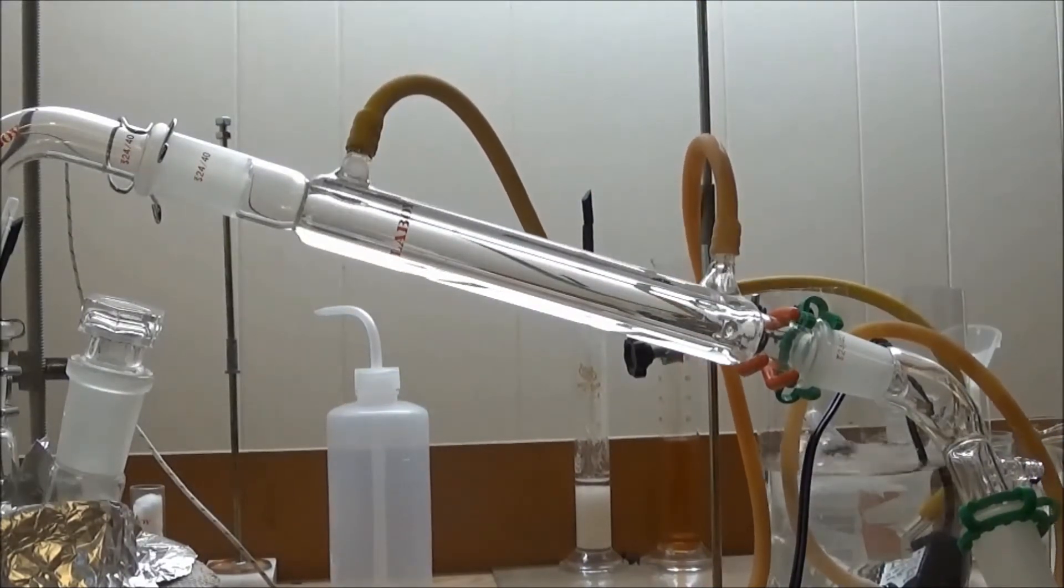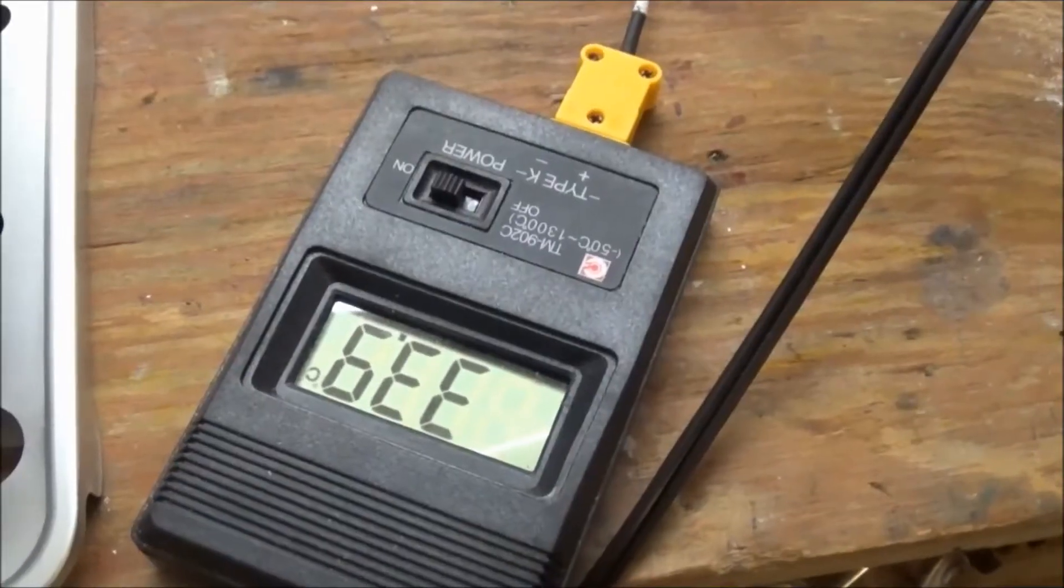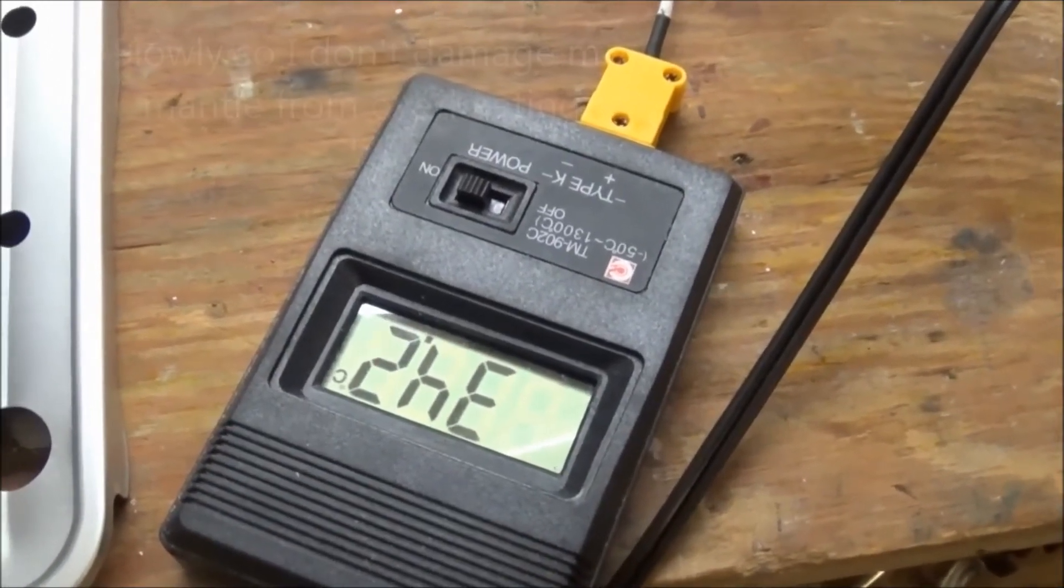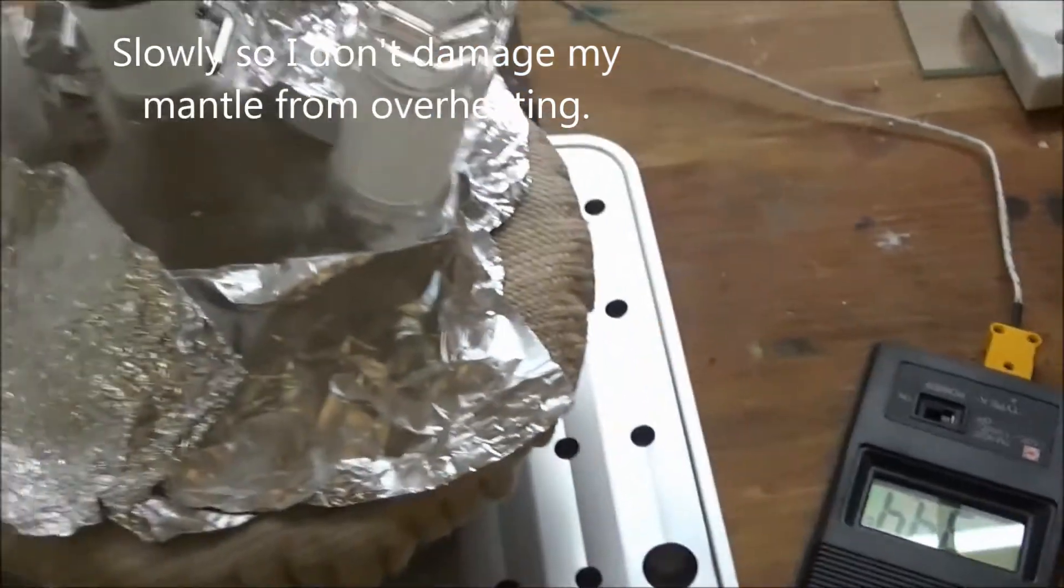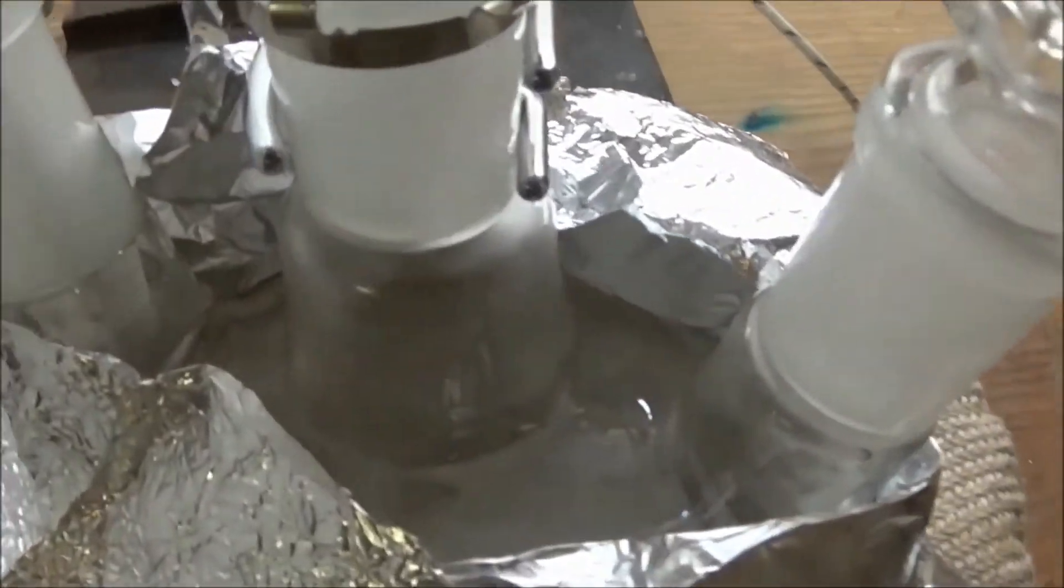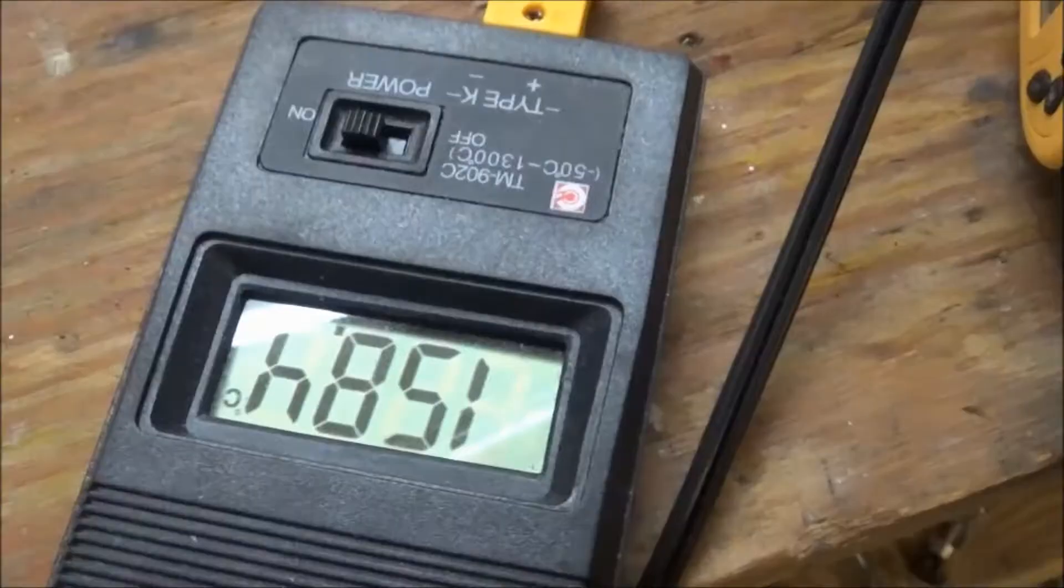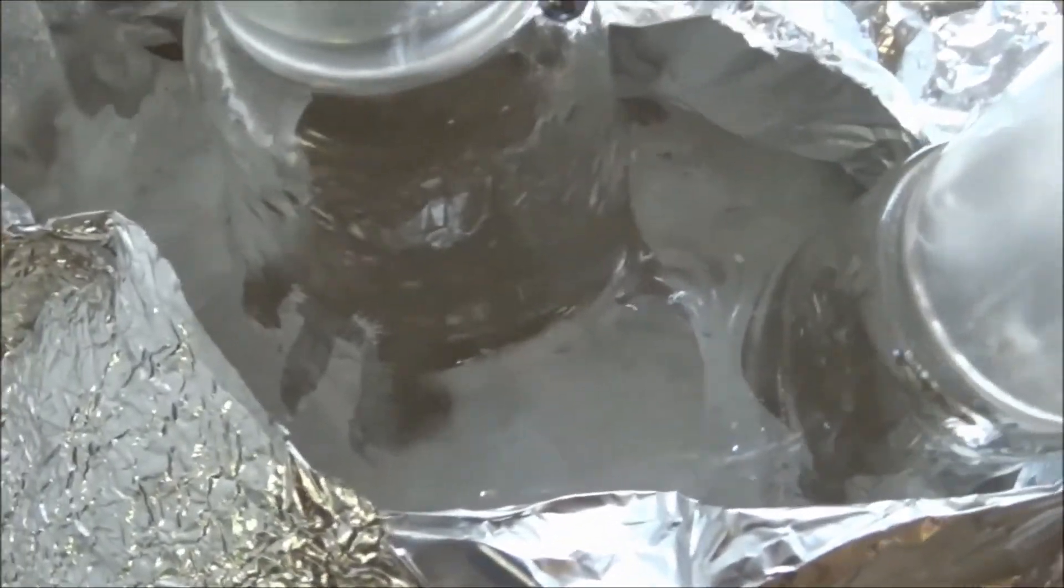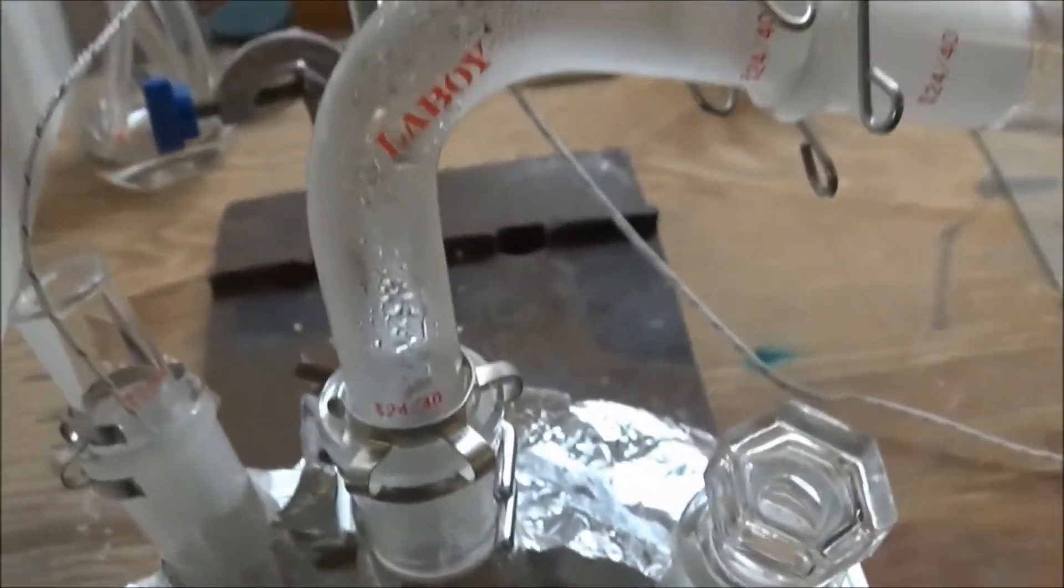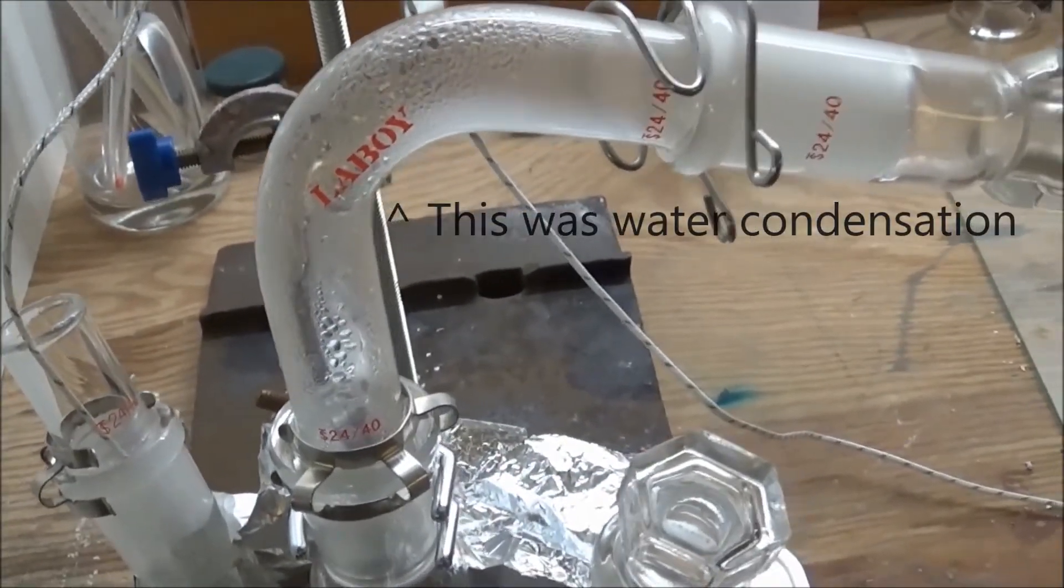My 1 liter heating mantle was turned on, and the temperature of the flask ramped up slowly. At around 150 degrees, the acid started to melt, and crystals of adipic acid formed higher up on the flask. Some water distilled over.